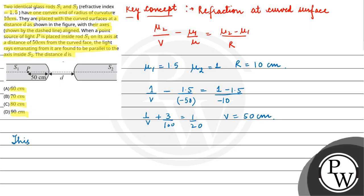So this acts as object for S2 with its distance U equal to d minus 50. The object distance is considered to be kept on left, so this will have a minus sign. Now, the question is given that the rays emanating from it are found to be parallel. That means the image is at infinity because it is parallel rays. And you have the radius of curvature again 10 cm.